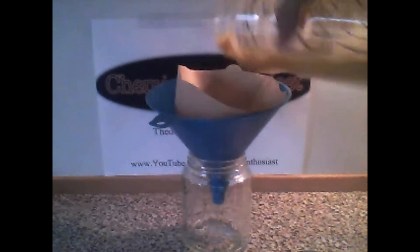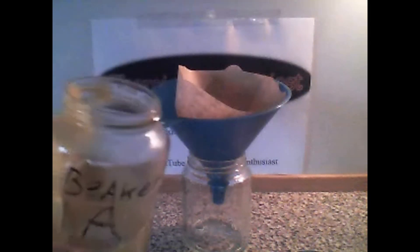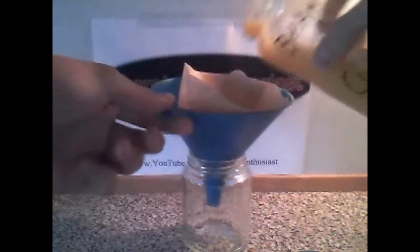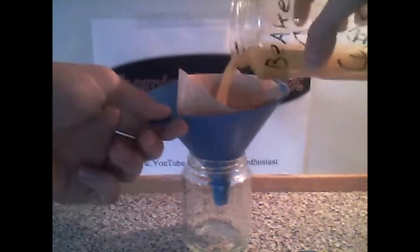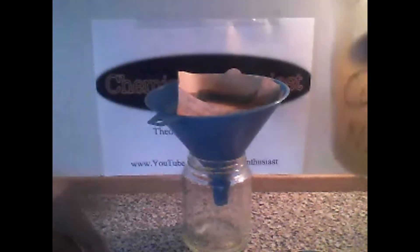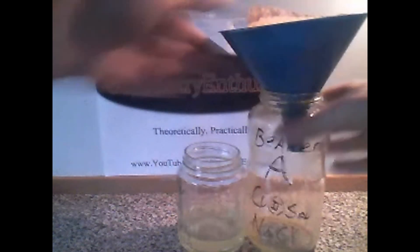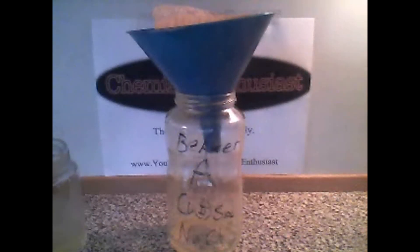When you have done that, pour the copper hydroxide and copper chloride mix into the funnel with the coffee paper. Now take some excess water to wash out the rest of the chemicals. When these are filtered through, you can wash it several times with water to improve the quality of the chemical. You can actually also wash it with ethanol, as copper chloride is also insoluble in ethanol, but I am going to leave this step out.